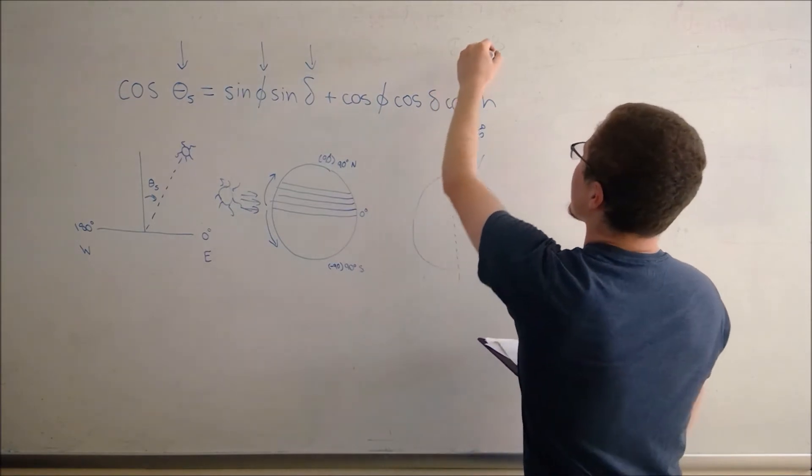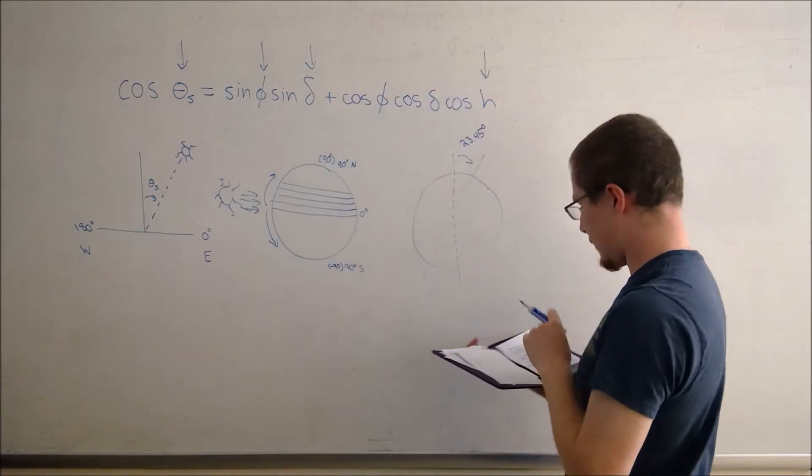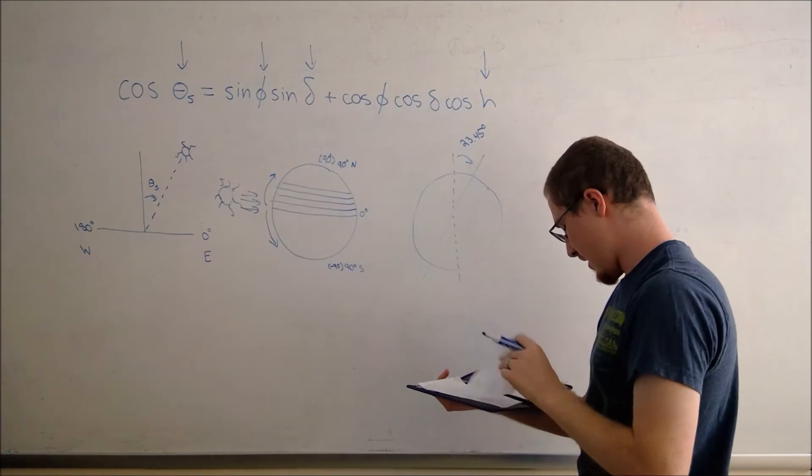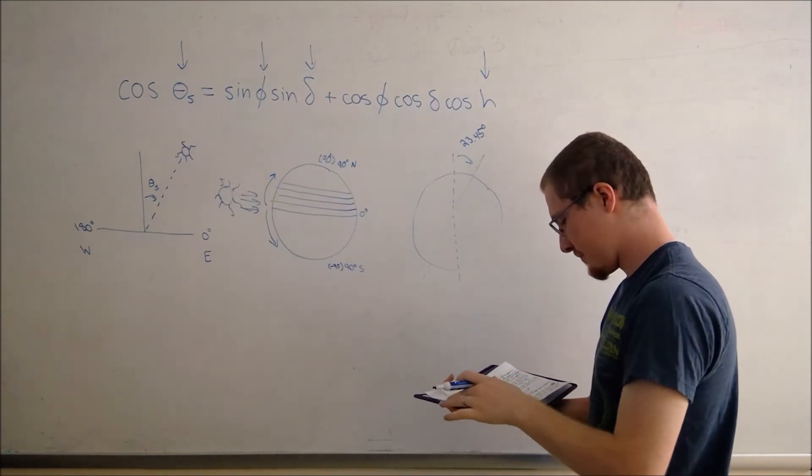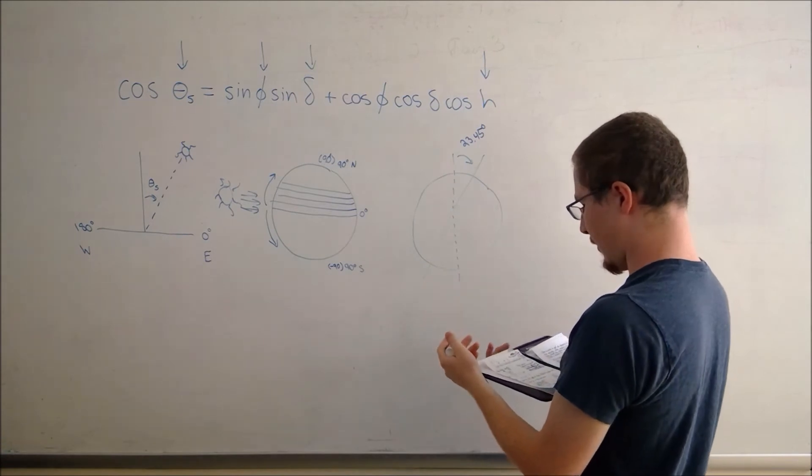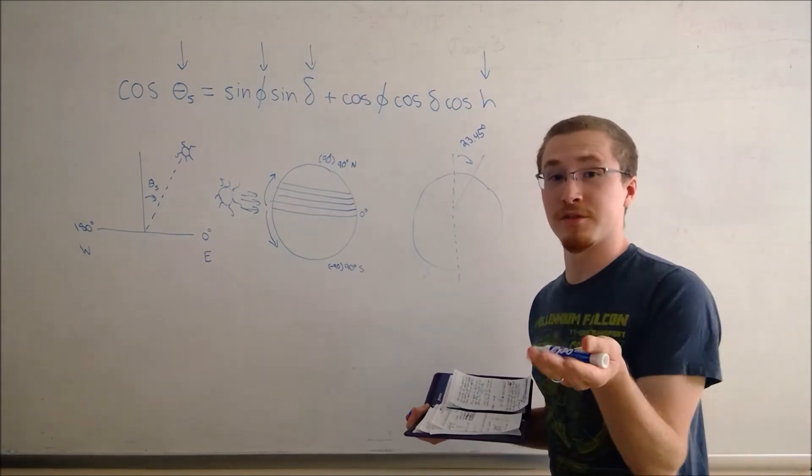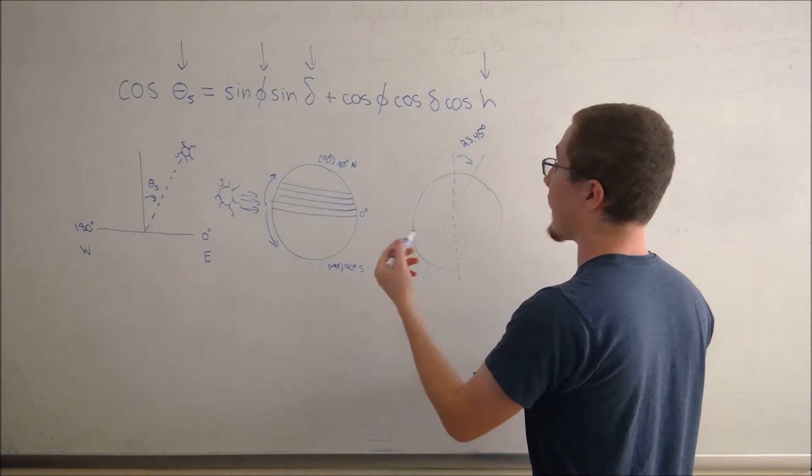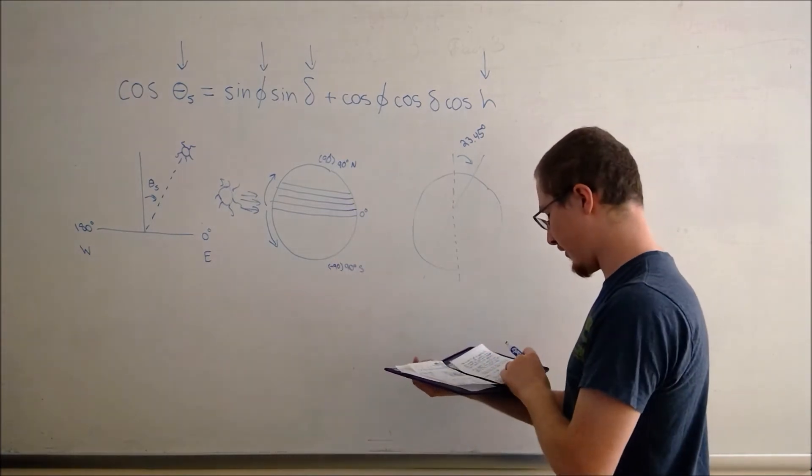Okay, and H is the hour angle, which is the longitude of the subsolar point relative to the Sun's location in the sky and that changes throughout the day. We will use that value later.